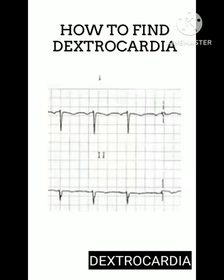We will see how to find dextrocardia on ECG. ECG reveals a negative P wave in the QRS complex in lead 1, in the absence of technical errors such as reversal of right and left arm connections.